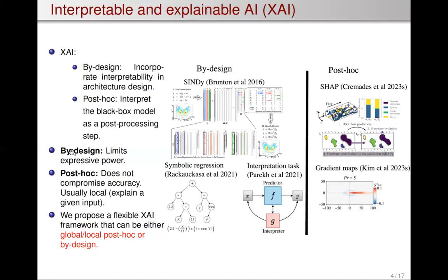The issue with by-design approaches is that they limit the expressive power of the neural network — you will have a hard time fitting complex data. Post-hoc approaches do not compromise accuracy, but they're often used in a local fashion in the literature, meaning you give an instance of an input and explain how that input propagates through the model. Our idea was to build a flexible XAI framework that could be applied either as global or local post-hoc, or even as a by-design approach, depending on what we desire.